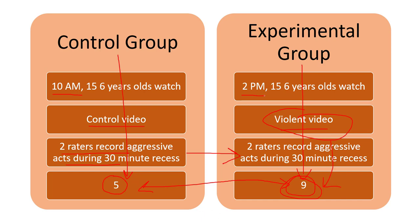These results would cause us to say yes, the hypothesis is correct — watching violent videos causes more aggression. However, there's a problem. One experiment was conducted at 10 a.m. and the other at 2 p.m. Would kindergarten or first-grade students respond the same at 10 a.m. versus 2 p.m.? Maybe not. They could be hungry and crabby, hyper after lunch, sleepier, or more awake.